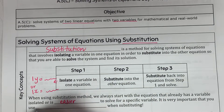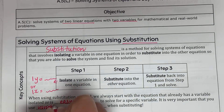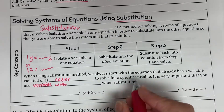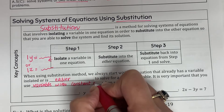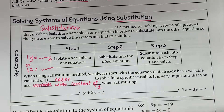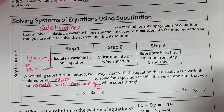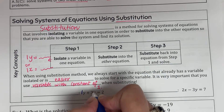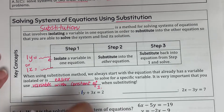It is very important that when substituting, you use the variable with a constant of one. In this example, you have two variables: y and x. Y has a coefficient of one and x has a coefficient of three. So if I have to isolate a variable, I'm going to isolate y.